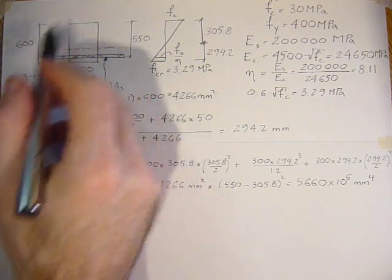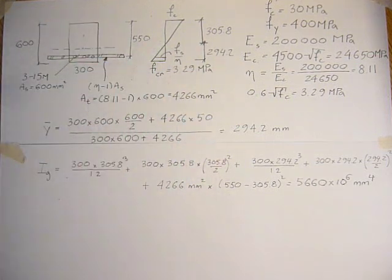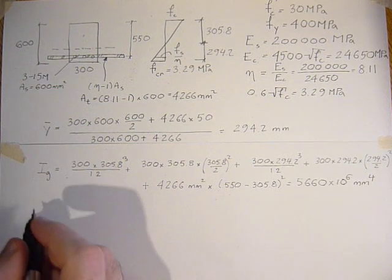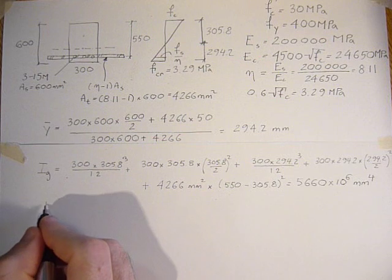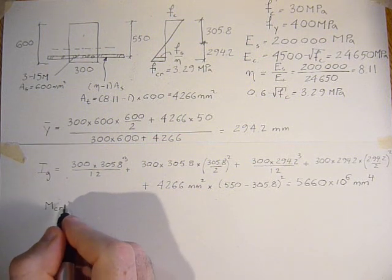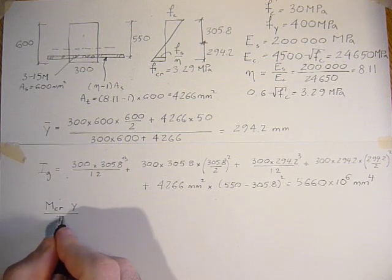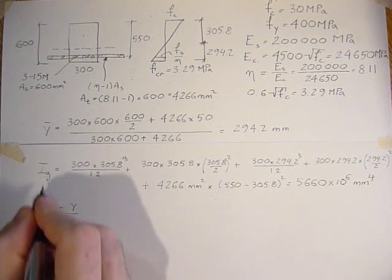Now that we have the gross inertia of this whole section, we can calculate the cracking moment. We use MY over I: moment cracking times Y over the gross moment of inertia.